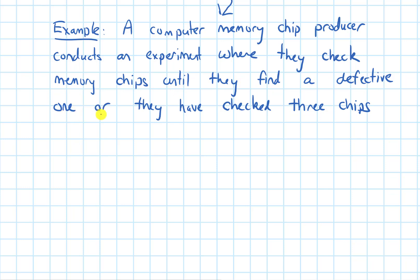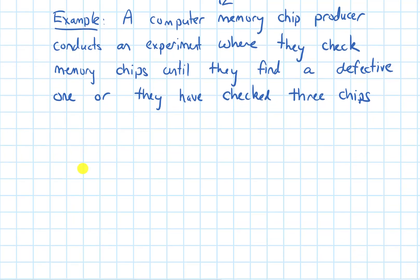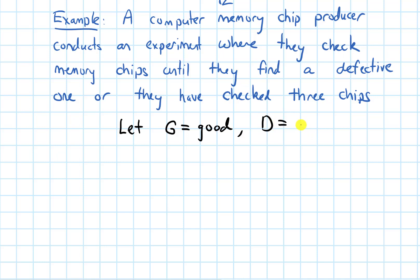The example is: suppose a computer memory chip producer conducts an experiment where they check memory chips until they find a defective one — that's one that's not working — or they have checked three chips. I'm going to let G represent a chip that is good, and D represent a chip that is defective.